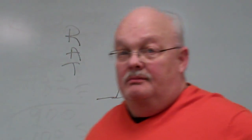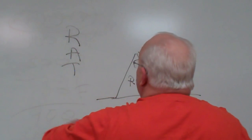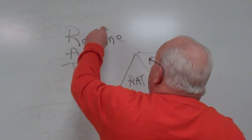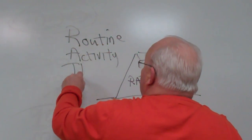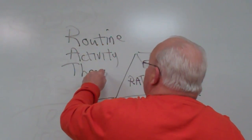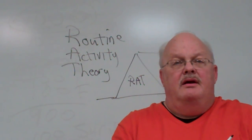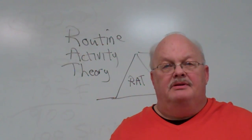Today what we're talking about is what we call routine activity theory. This is just a really simple and usable theory on why crime happens.